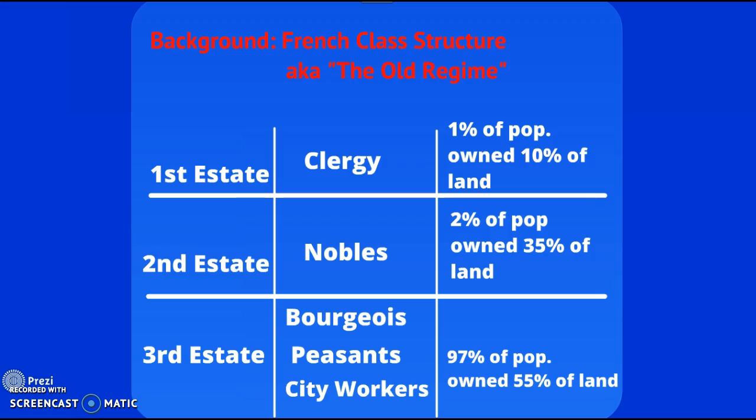The Second Estate is the Nobles — all of the people who traditionally have been the rich people in Europe: the knights, the ones that live in the castles and big palaces. To be a noble, you have to inherit land. The other way in France to move into the Second Estate is if you got a high-ranking job in the court system, government, or military. There's twice as many nobles as clergy, and they own a little over a third of the land. They're actually richer than the clergy, but they do pay some taxes.